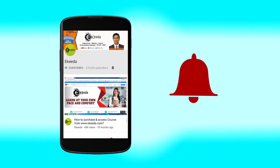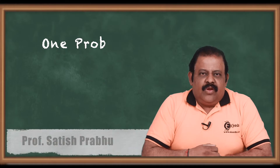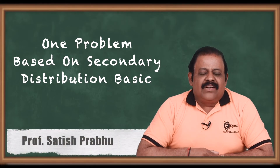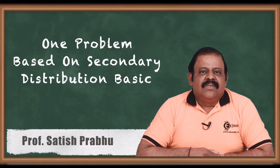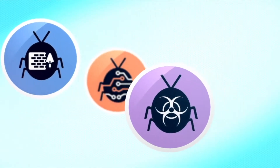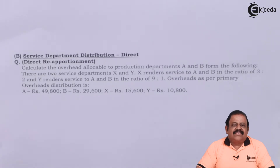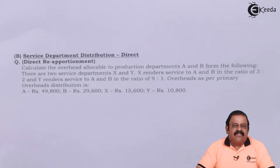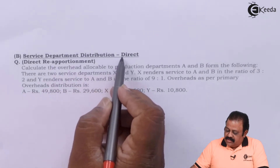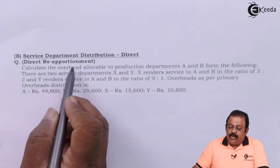Hello friends, now we'll be discussing one question on secondary distribution of overheads as a basic concept. Once overheads are distributed among the various departments, the overheads relating to service departments are reallocated and redistributed to production departments. We are required to understand here: service department distribution, direct method, direct reapportionment.